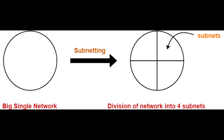This video is on IPv4 subnetting. Subnetting is a process by which the portions of an IP address create more networks than you would have if you use the default subnet mask. It takes a network and splits it into smaller networks, known as subnets.